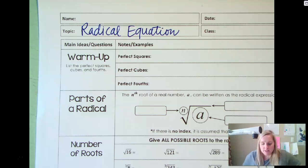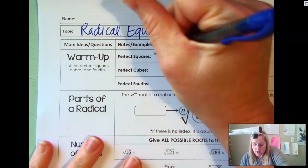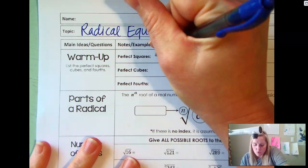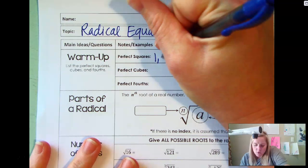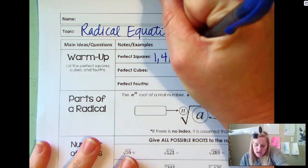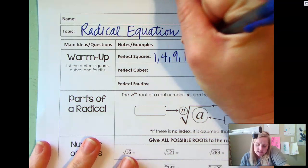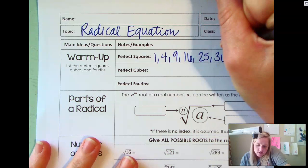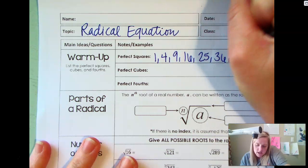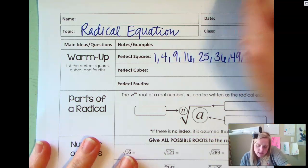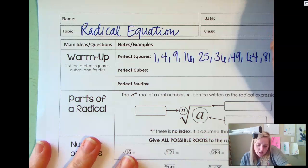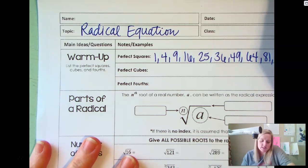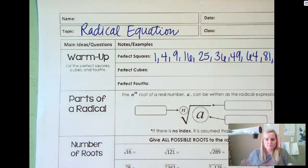So my perfect squares would be: 1 squared is 1, 2 squared is 4, then 9, 16, 25, 36, 49, 64, 81, 100, and so on and on and on.